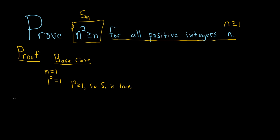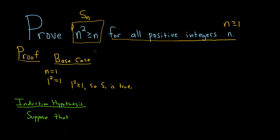The next step is called the induction hypothesis. In the induction hypothesis, you assume your statement is true for some positive integer k. So I'll say suppose that our statement is true when n equals k — in other words, s sub k is true. What that means is you just plug in k for everything: k squared is greater than or equal to k, for some positive integer k.